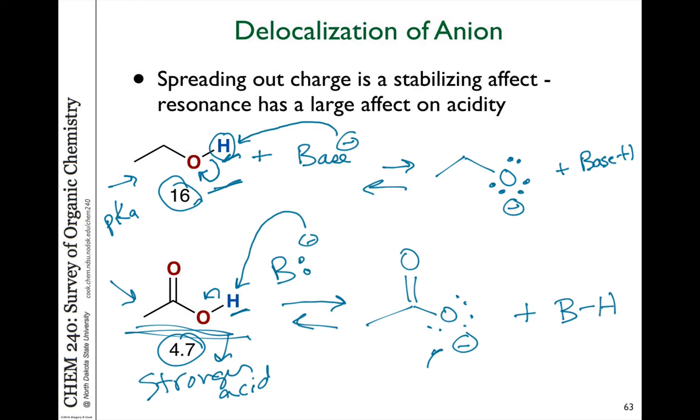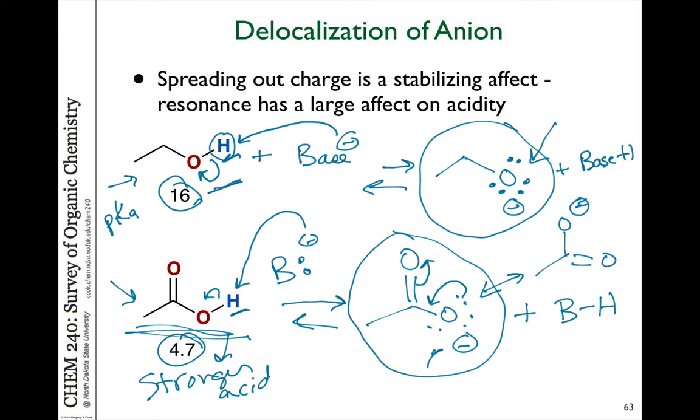So why is it easier for acetic acid to give up the proton than ethanol to give up its proton? Well, it has to do with the stability of the resulting negatively charged species that's generated. In the top case, this negative charge is localized on one oxygen. There's no place for it to move because there's no possibility of resonance forms. Whereas in the bottom case, as we just discussed, acetate can actually have two different resonance forms. The hybrid structure is something in between, and that negative charge is spread out. That stabilizes it. So this is more stable than the anion on top. This one is less stable. Thus, the resonance of the acetate ion produced has an effect on the equilibrium. So that's how the resonance and the ability for delocalization or spreading out of charge can affect reactivity.